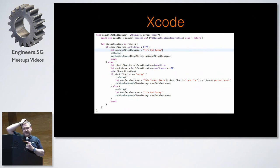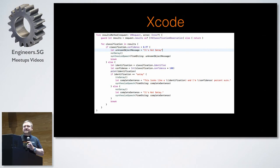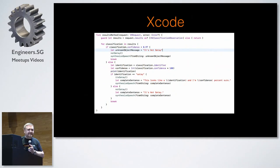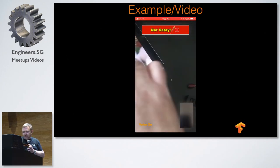The response handling code basically says: if the classification confidence is less than 97%, say it's not satay — because the model tends to get more things wrong in that direction. I've also added some code to get Siri to read it out for you, using synthesized speech to tell you whether you got satay or not satay. Here's the result with audio.